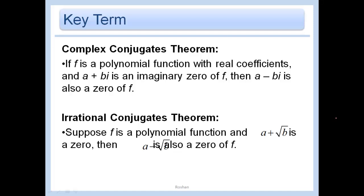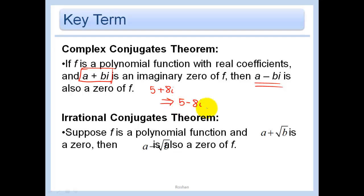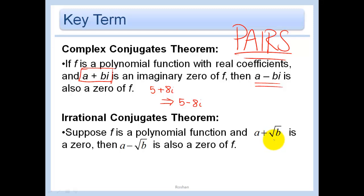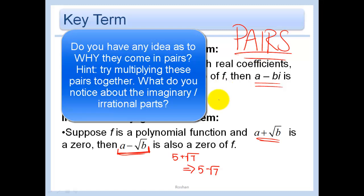Two more key terms. The complex conjugate theorem states that if a polynomial has a plus bi as an imaginary zero, then a minus bi must also be a zero. So if 5 plus 8i is a solution, then 5 minus 8i is automatically also a solution. The same applies to irrational solutions: if a plus root b is a zero, then a minus root b is also a zero. Imaginary and irrational solutions always come in conjugate pairs.